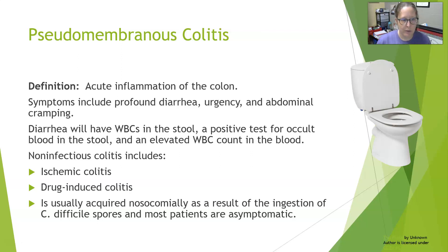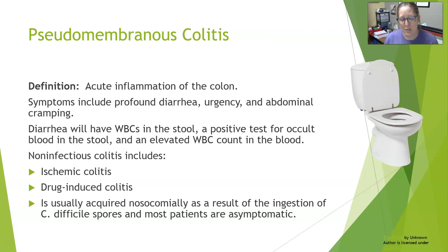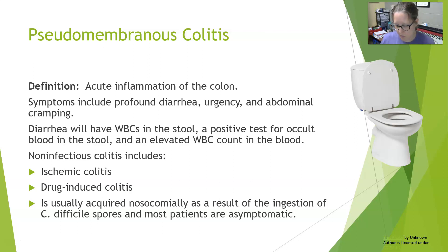Non-infectious colitis will include ischemic colitis and drug-induced colitis. The infectious form is usually acquired nosocomially — in the hospital — as a result of the ingestion of C. difficile spores. Most patients are asymptomatic, and a lot of patients just carry a certain amount of C. difficile in their gut. Oftentimes if they get treated with really potent antibiotics, it can destroy enough of the gut bacteria that C. difficile can take over and cause pseudomembranous colitis. So it is often seen as a result of antibiotic therapy in hospitals.